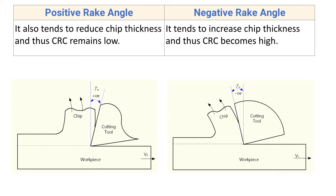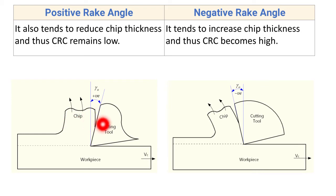The next difference: positive rake angle also tends to reduce the chip thickness, and thus the CRC remains low. Due to positive rake angle, the tool tip is very sharp, so the thickness of the chip produced during machining is less. The CRC — chip reduction coefficient — is defined as the ratio of chip thickness to uncut chip thickness, and with less chip thickness the CRC also remains low with positive rake angle.